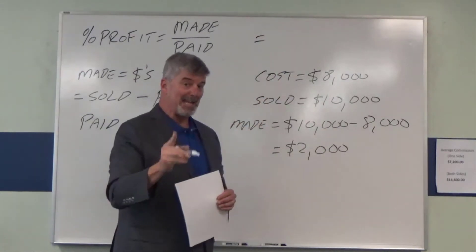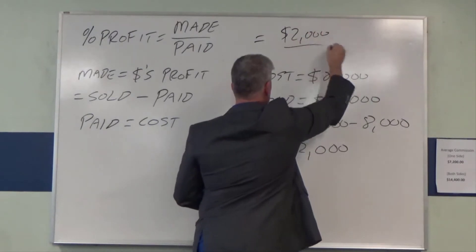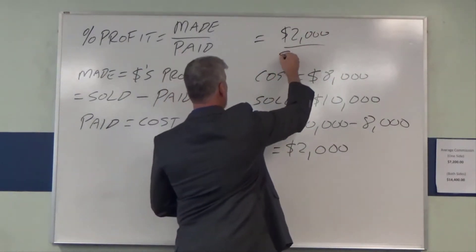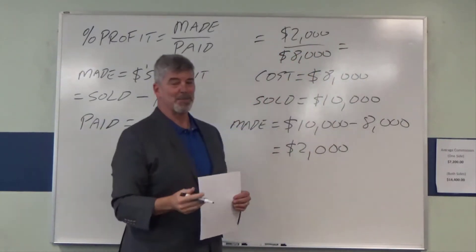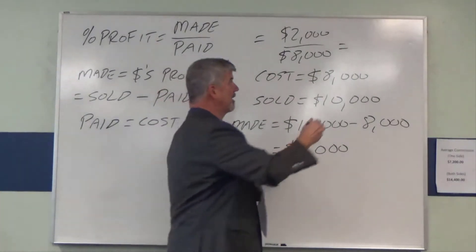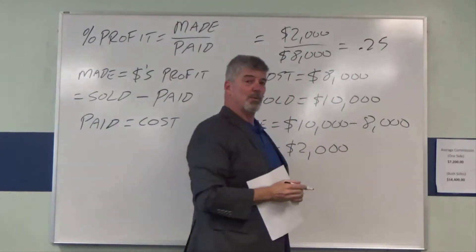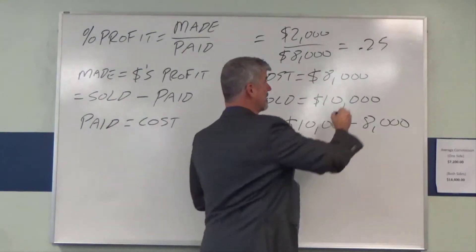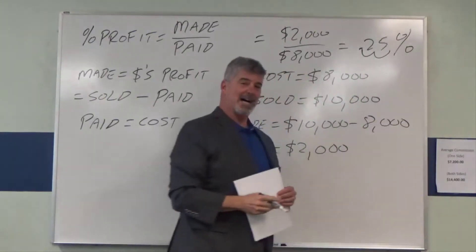So we made $2,000 on the deal. We paid $8,000. And again, top number divided by the bottom number gives us $0.25. Or if we move the decimal over two spots, that's a 25% profit. Not too shabby.